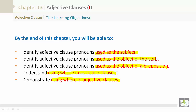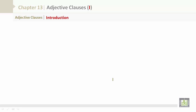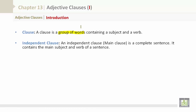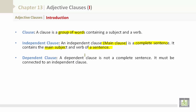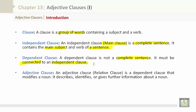Adjective Clauses Introduction. A clause is a group of words containing a subject and a verb. An independent clause, also known as a main clause, is a complete sentence — it contains the main subject and verb of a sentence. A dependent clause is not a complete sentence; it must be connected to an independent clause.